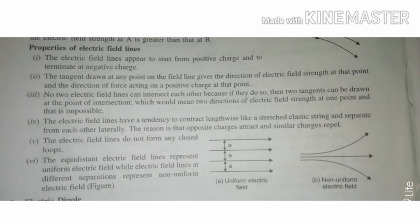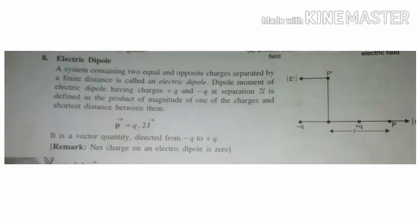In this chapter there are electric fields. Electric field lines and their properties are important. The electric field lines appear to start from positive charge and terminate at negative charge. The tangent drawn at any point on the field line gives the direction of electric field strength and the direction of force acting on a positive charge at that point. The electric field lines do not form any closed loops and they do not intercept each other.